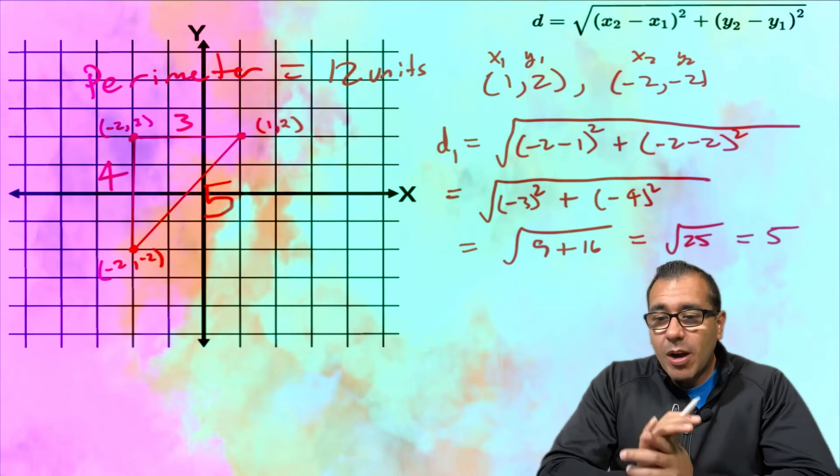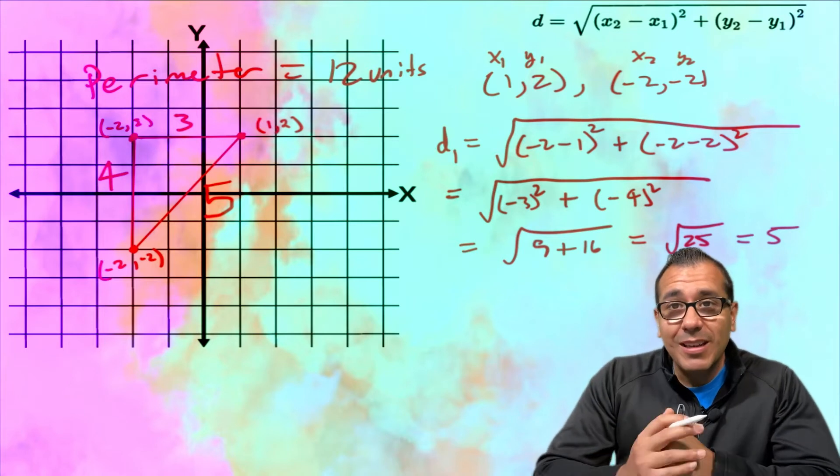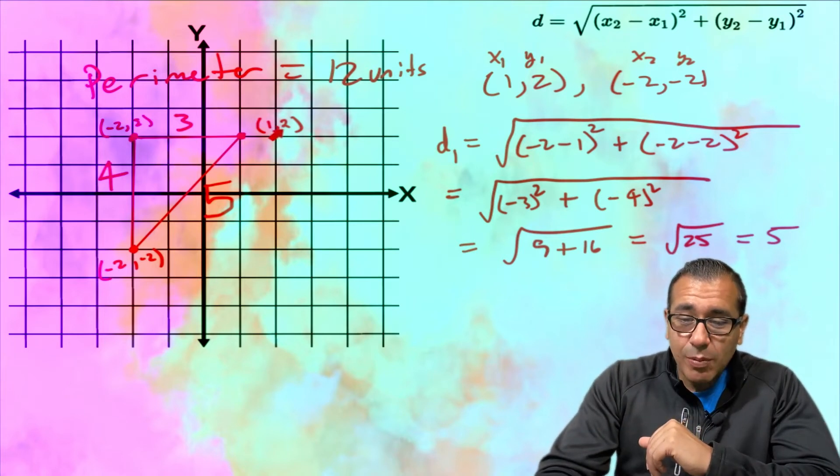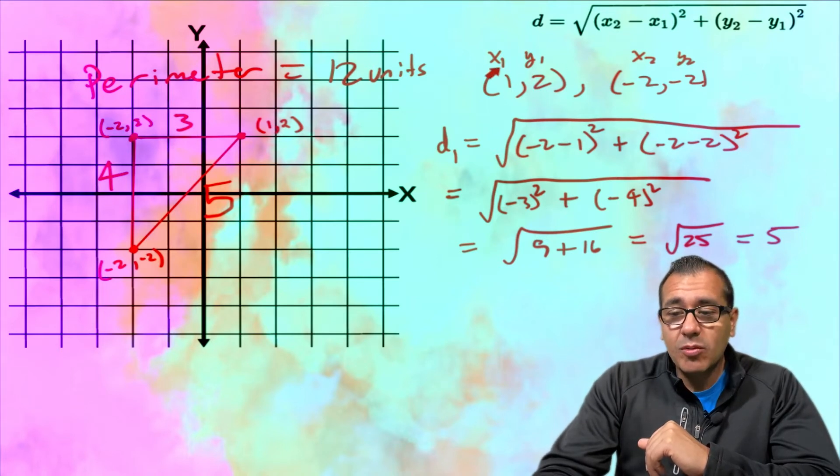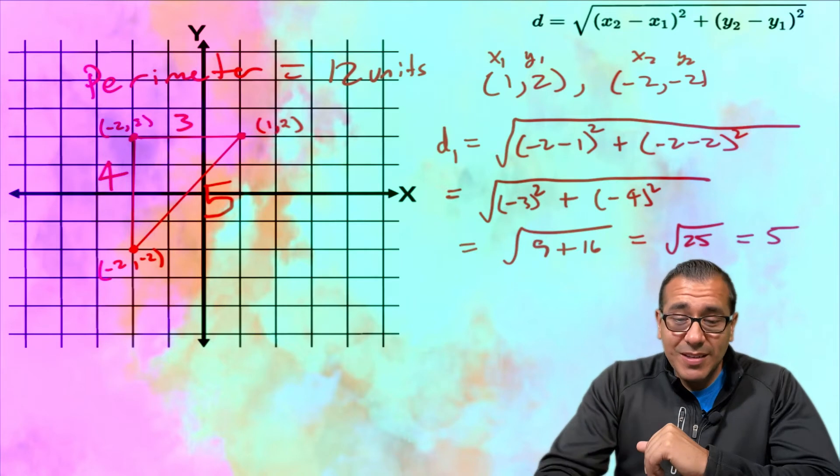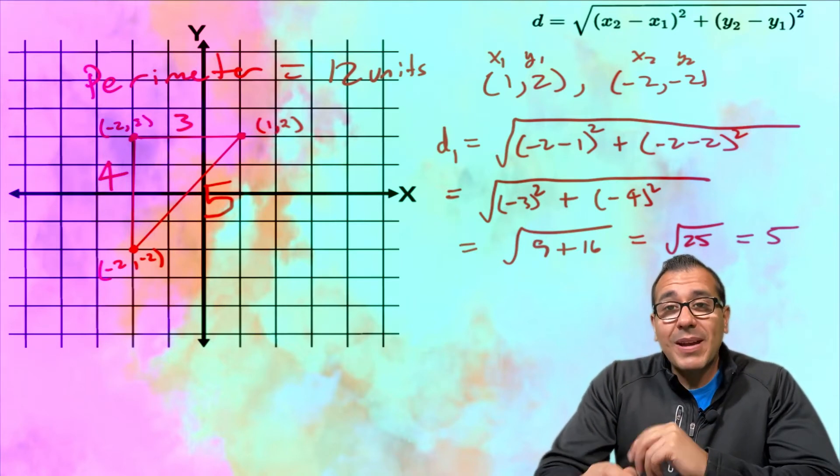Let me walk you through it. So what you're gonna do and what I did here is you take two points. So I took the point (1,2) - this point right here - and I called that my first point, so x1, y1. Then I took my second point here (-2,-2) and that's my second point.